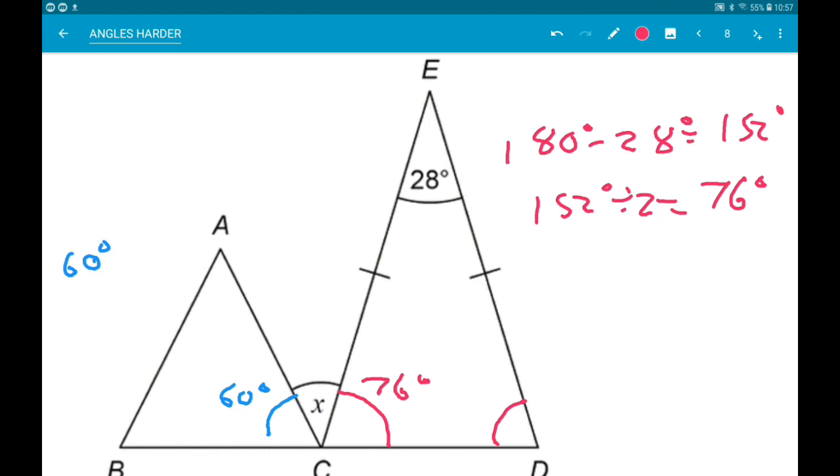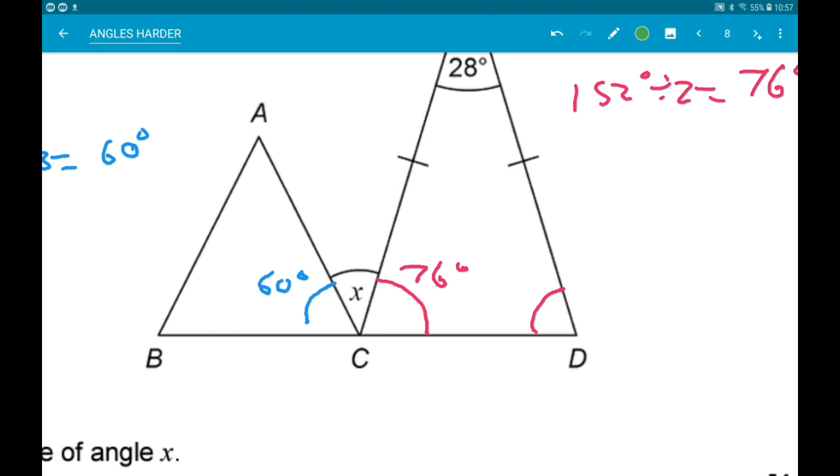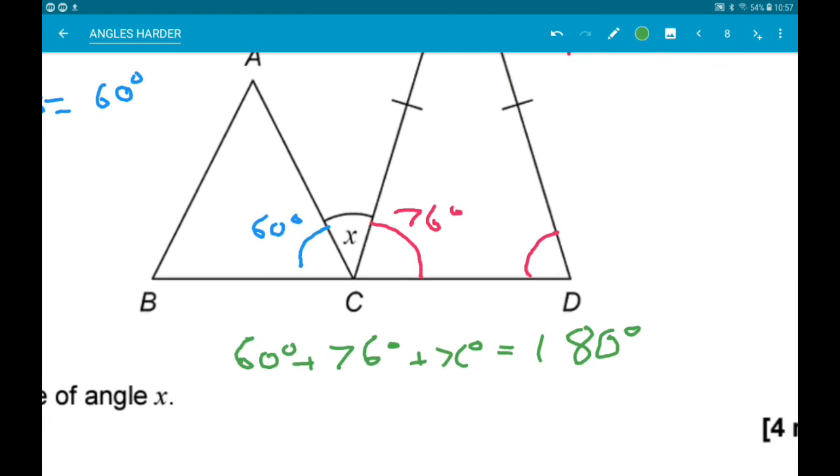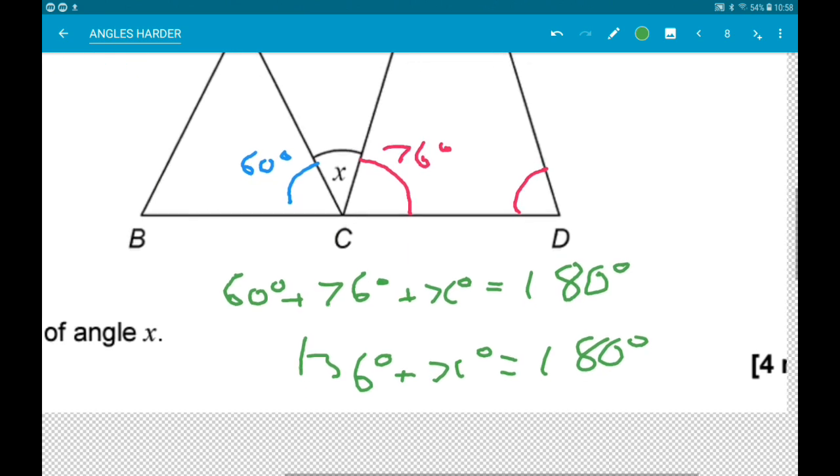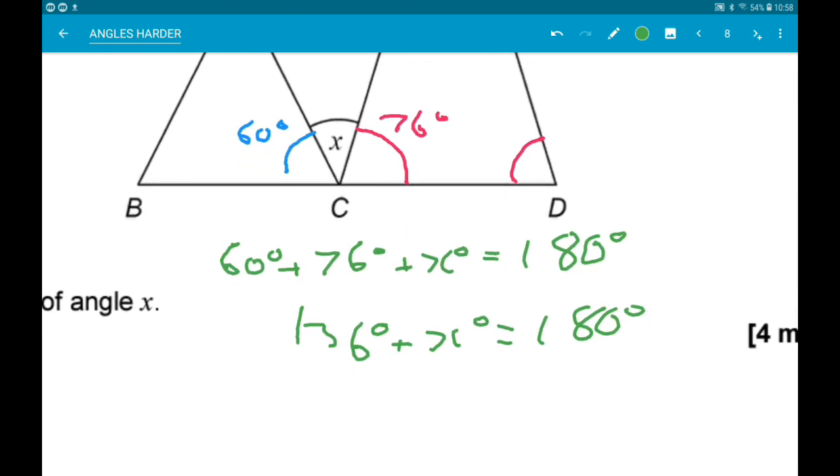So we now know that 60 add 76 add x is 180 degrees. Now 60 add 76 is 136. Finally subtract 136 from both sides and we get x is 44 degrees.